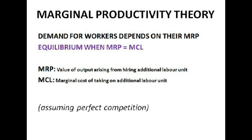Marginal productivity theory is definitely something really good to get to grips with. It basically states that demand for workers depends on their MRP, where MRP equals their marginal revenue product — the extra value of output arising from hiring an additional labour unit. You calculate it by multiplying a worker's marginal product by their marginal revenue. The equilibrium occurs when MRP equals MCL, where MCL is the marginal cost of taking on an additional labour unit. It's important to note that the marginal labour cost might not just be the extra amount you pay them, but could also account for the fact that hiring an extra worker means you'll probably have to give your other workers a pay rise too.